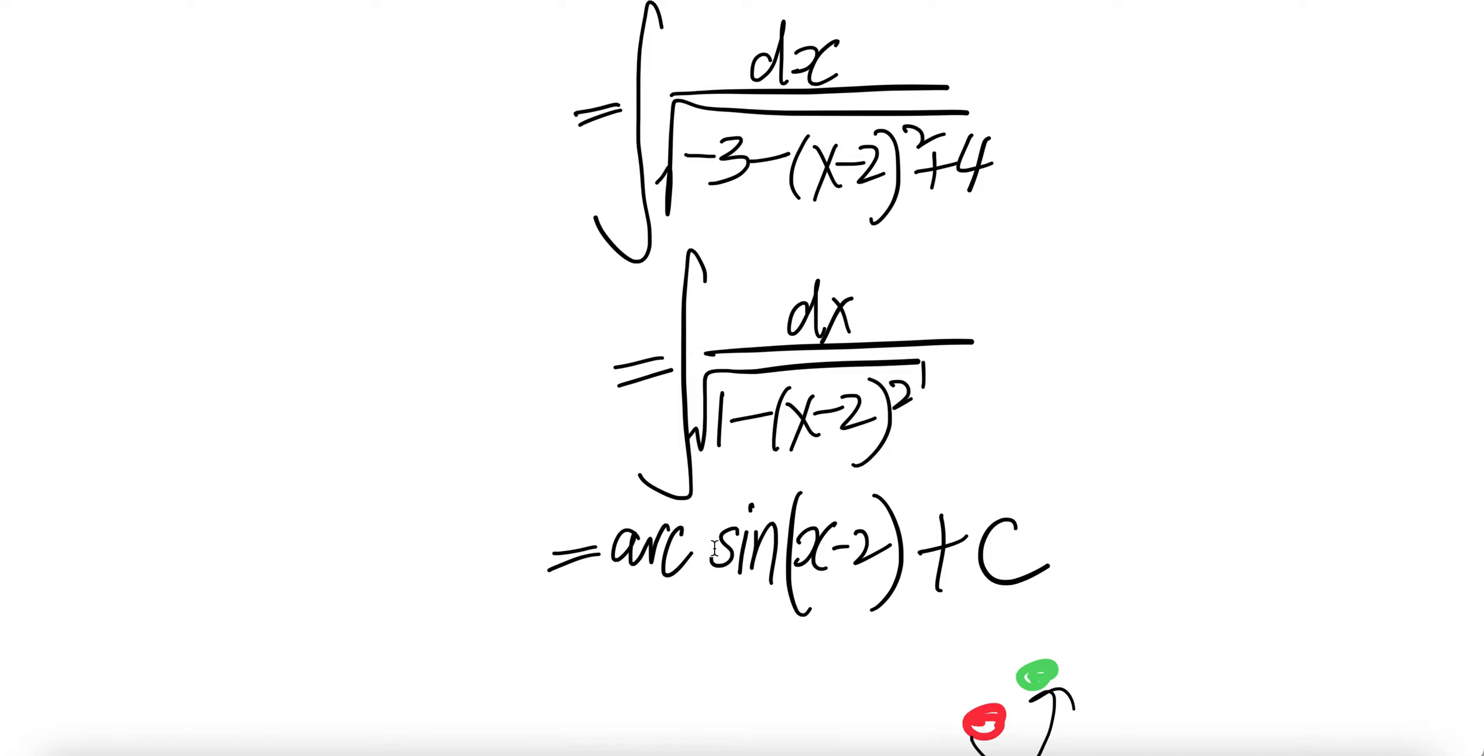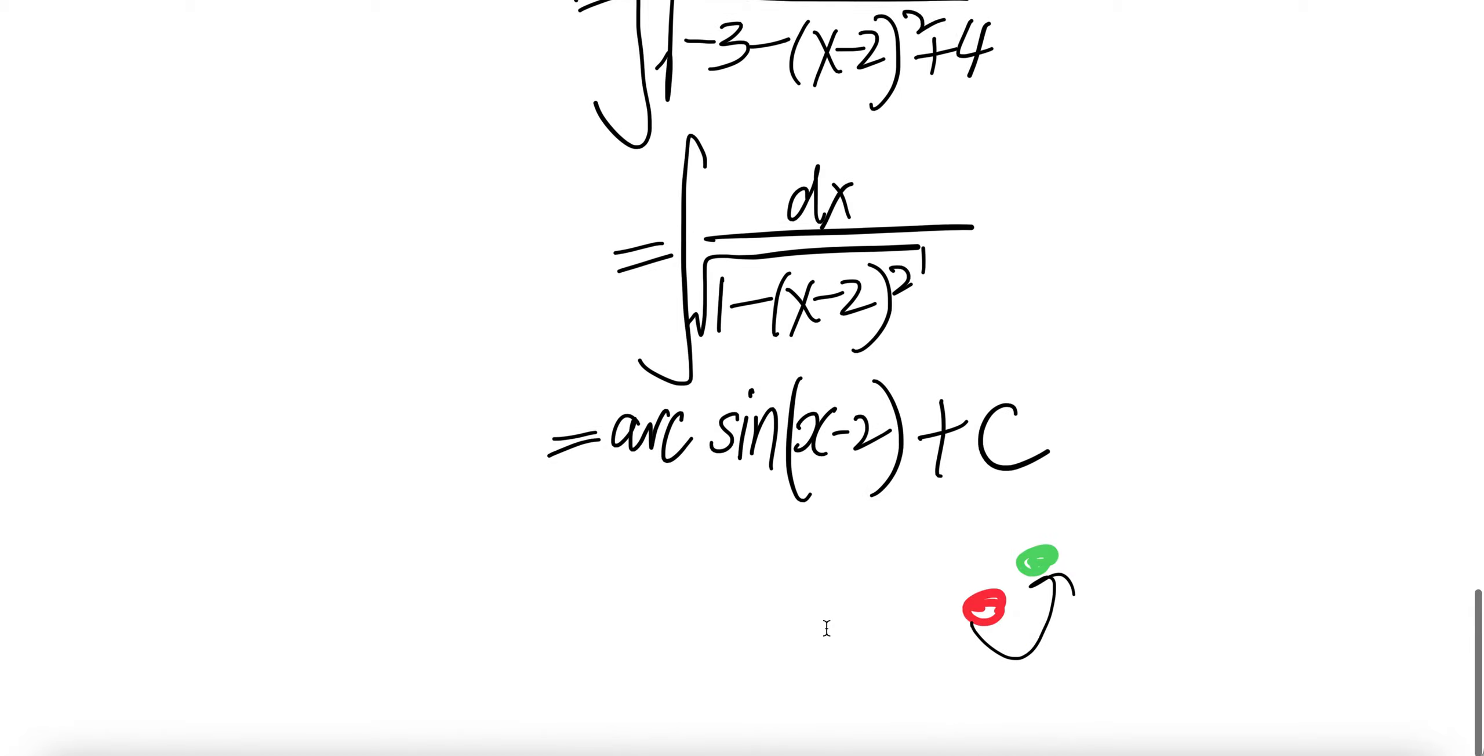The integral of this is arc sine, whatever the angle here. No need for correction because there's 1 here, 1 here, no need for correction. So the answer is arc sine x minus 2 plus c.